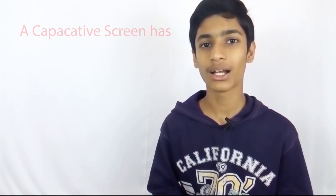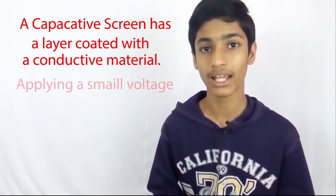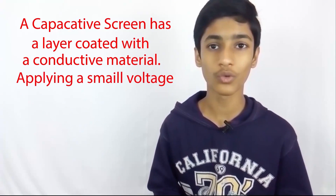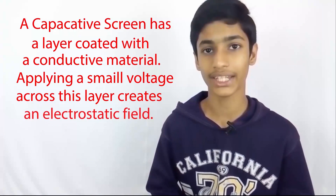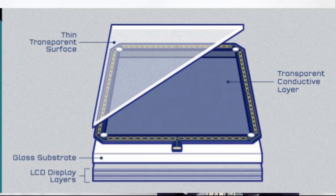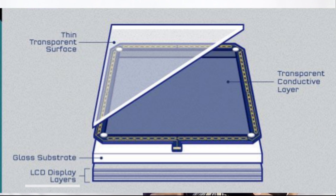Capacitive screens: a capacitive screen has a layer coated with conductive material. Applying a small voltage across this layer creates an electrostatic field. This is how the capacitive touch screen looks. This is called the thin transparent surface. This is called the transparent conductive layer. This is called the glass substrate. And this is called the LCD display layers.